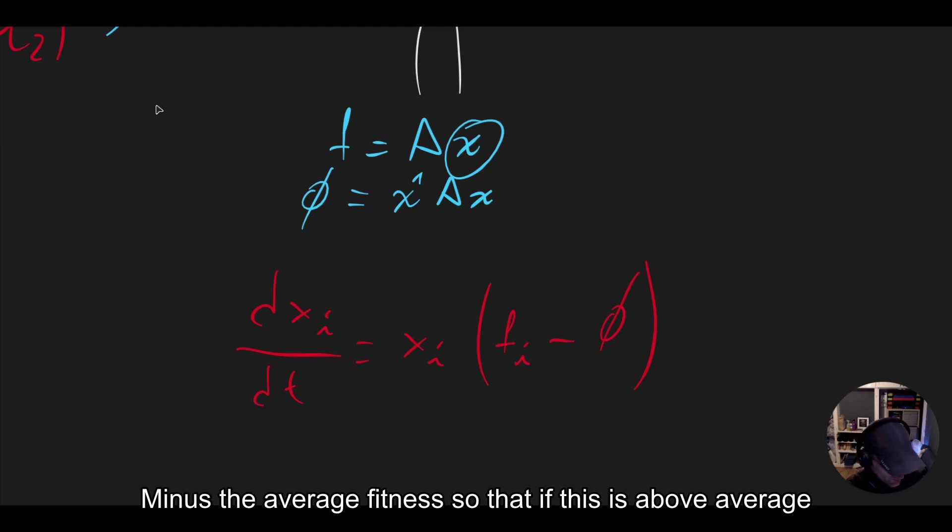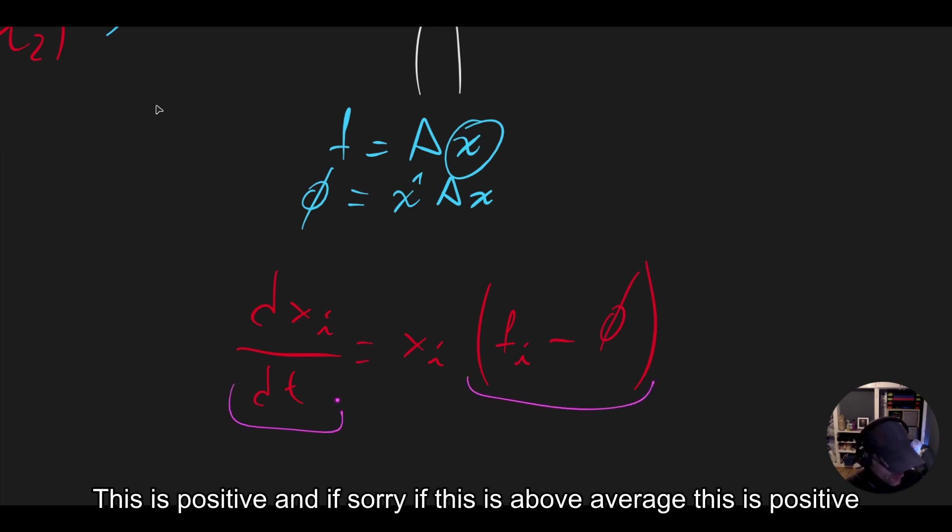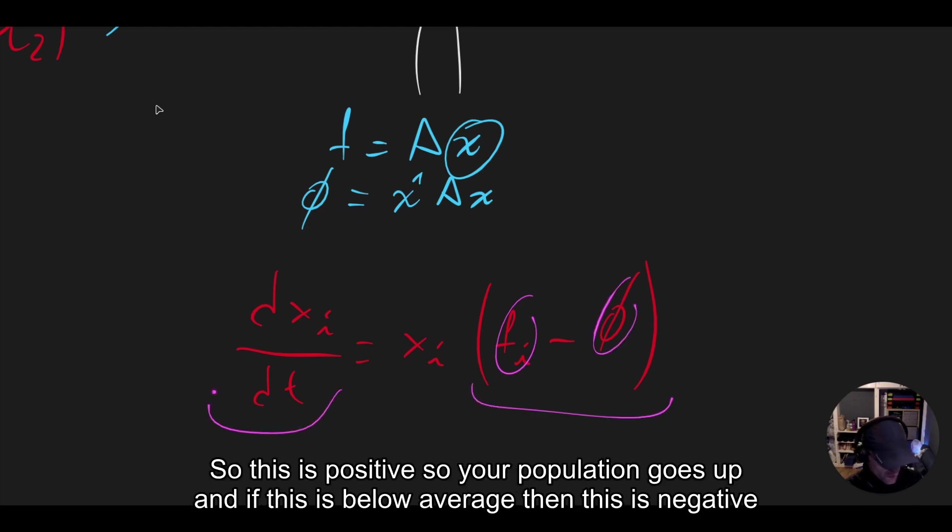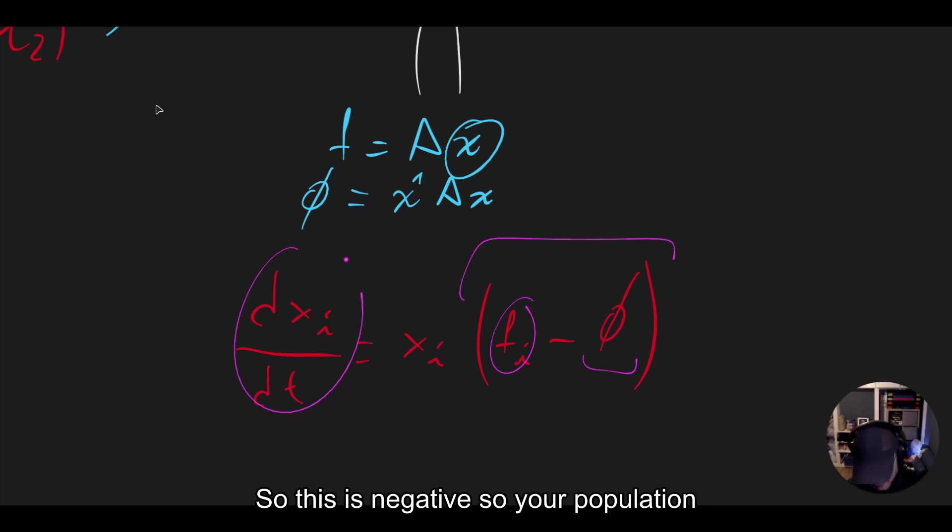So that if this is above average, this is positive. So your population goes up. And if this is below average, then this is negative. So your population goes down.